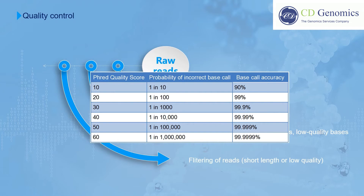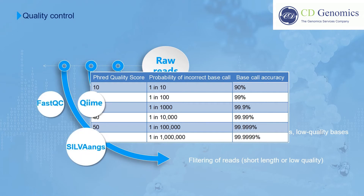Compared with shotgun sequencing, this is more significant for 16S sequencing. For 16S sequencing, it is recommended to set a quality threshold as high as possible and to trim sequences along the entire length. A variety of tools have been developed for quality checking and read filtering, including FastQC, QIIME, Silva NGS Pipeline, and BMPOS Pipeline.